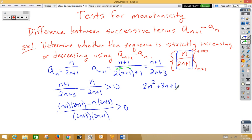When we distribute the negative n, we get a negative 2n squared minus a 3n all over 2n plus 3, 2n plus 1. Let's see if that's greater than 0.